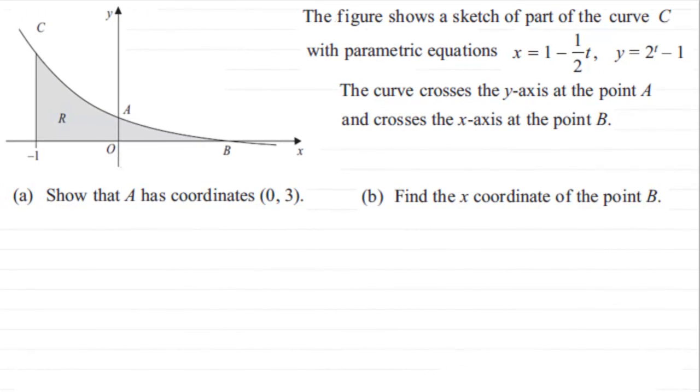Hi, now in this example we're told that this figure shows part of the curve C with parametric equations x equals 1 minus a half t and y equals 2 to the power t minus 1. And the curve crosses the y-axis at the point A and crosses the x-axis at the point B.